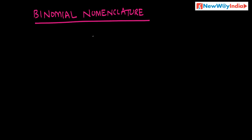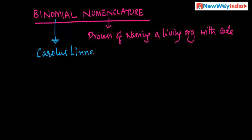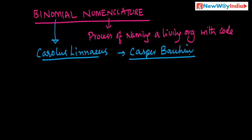First, you need to know what nomenclature is. Nomenclature is the process of naming a living organism according to certain rules and regulations — it is a process of naming a living organism with the codes and rules created by ICBN, ICZN, etc. Binomial nomenclature was given by Carolus Linnaeus, but it was actually first given by Caspar Bahin.